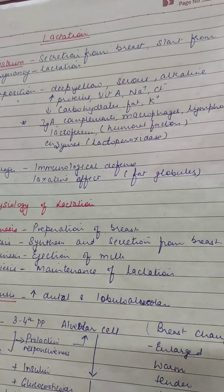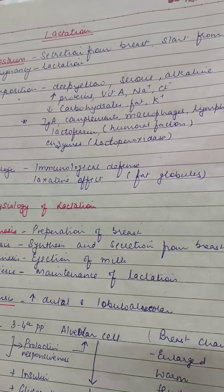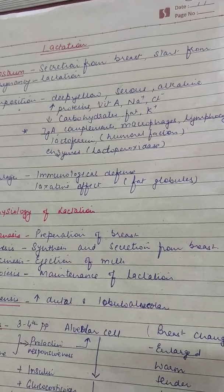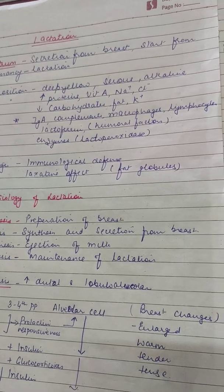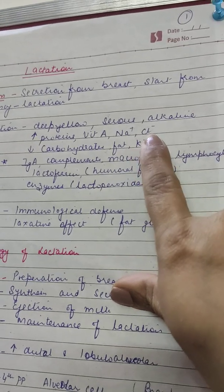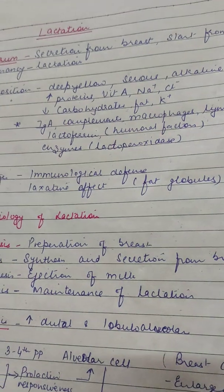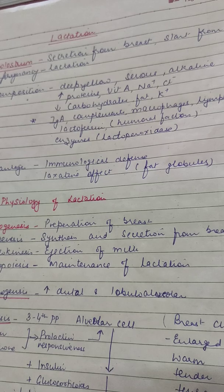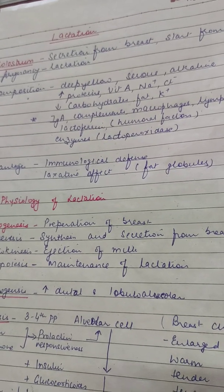The advantages are that it plays an important role in immunological defense because it contains IgA complements and macrophages. It also has a laxative effect because of the fat globules in it. Although it has lesser carbohydrates and fat compared to breast milk, fat is still present in the form of fat globules which play a role in the laxative effect.